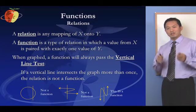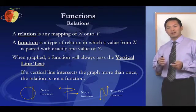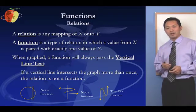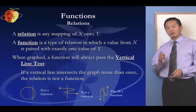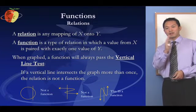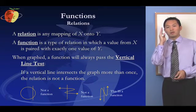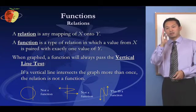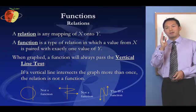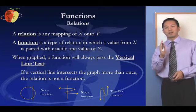So a relation, just a relation in general, can have multiple values of y for an x. A function cannot. So when we have this vertical line, essentially what we're saying, if you think of the xy plane, we're putting a vertical line, and that might equate to any value of x.